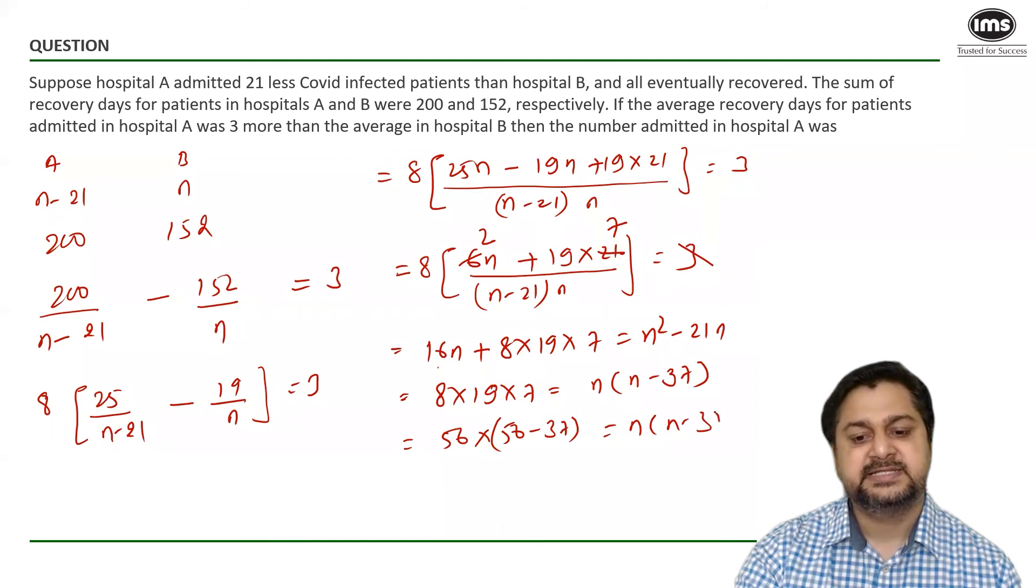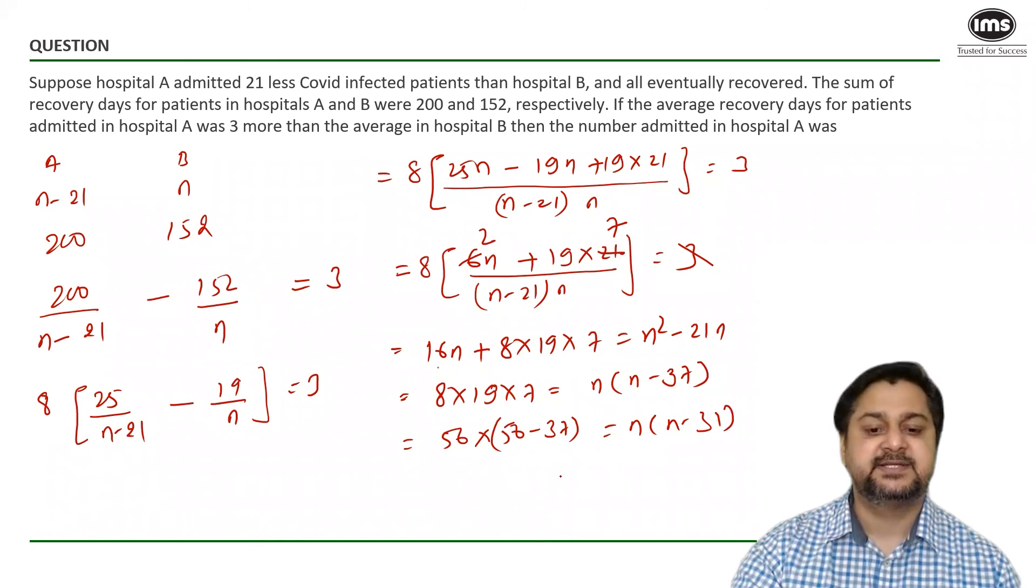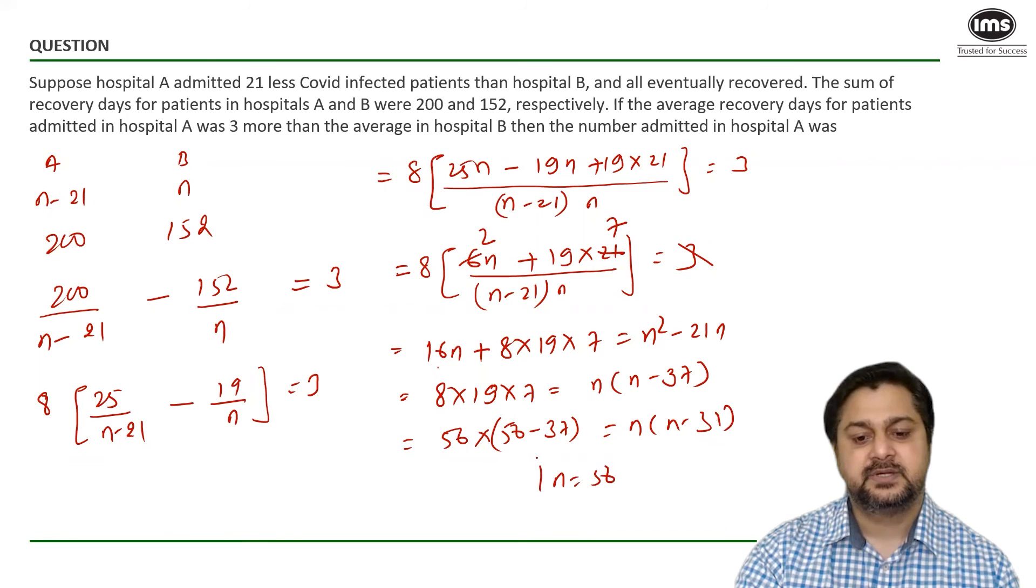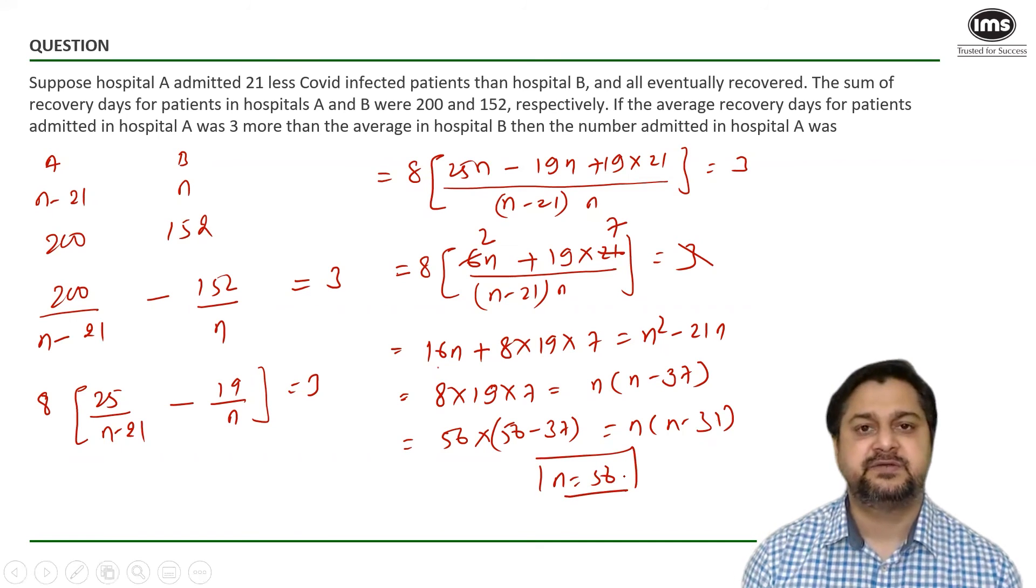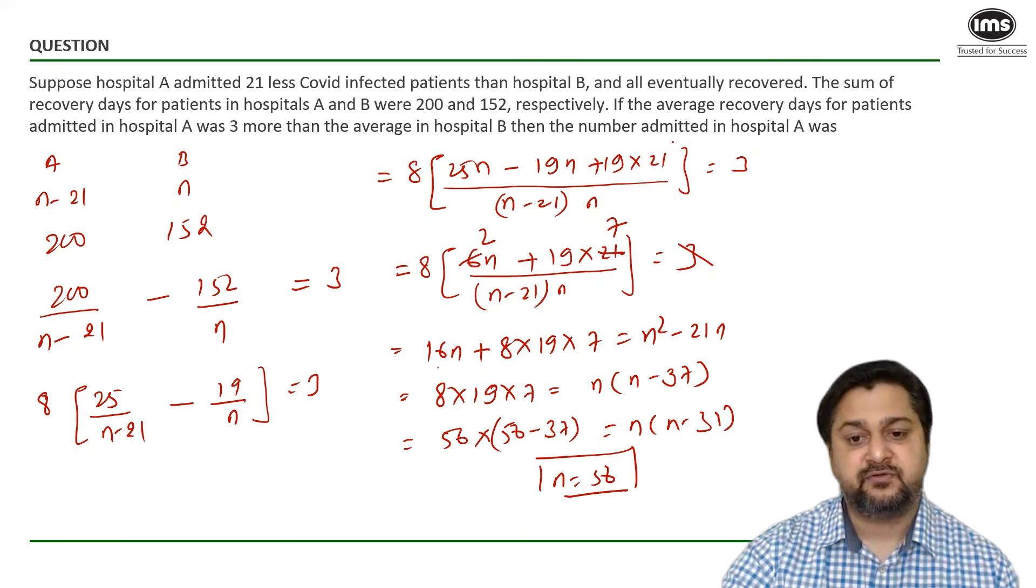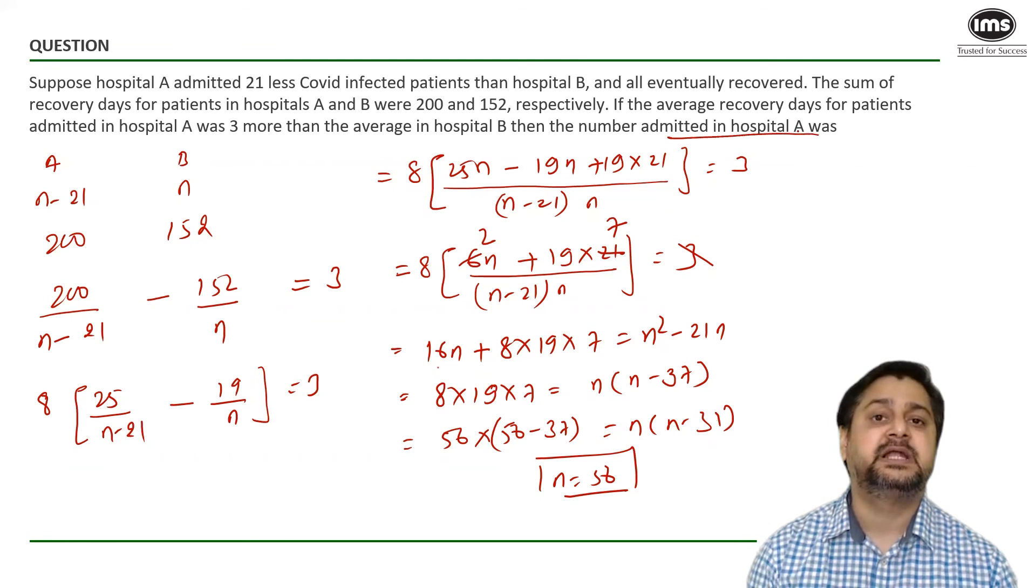Because 56 minus 37 is eventually 19. This is N into N minus 37. So that would tell us that N is equal to 56. So once I get N is equal to 56 it would be very straightforward for us to find out the value of the number of patients admitted in hospital A.